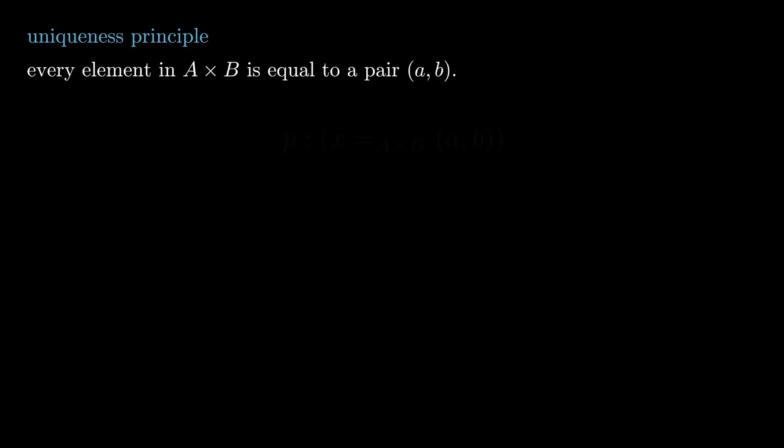From this recursion principle, we can prove the uniqueness principle, which is subtle in its own right. This is the proposition, emphasis on proposition, that every element in A cross B is equal to a pair little a comma little b.